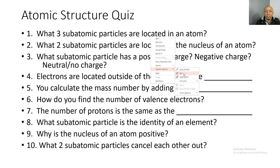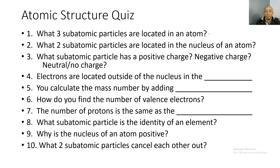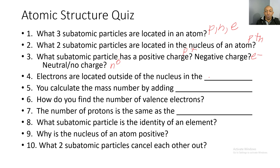Question 1: What three subatomic particles are located in an atom? Answer: protons, neutrons, and electrons. Question 2: What two subatomic particles are located in the nucleus? Answer: protons and neutrons. Question 3: What subatomic particle has a positive charge? Answer: protons. Question 4: What subatomic particle has a negative charge? Answer: electrons.